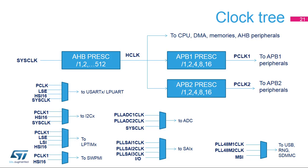The clock tree is shown here. The AHB clock is generated from the system clock divided by the AHB prescaler from 1 to 512. The AHB clock feeds the CPU, DMA, memories, and AHB peripherals. The two APB clocks are derived from the AHB clock, divided by the APB1 prescaler and the APB2 prescaler, each from 1 to 16.